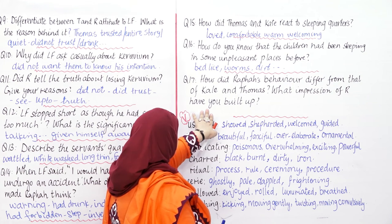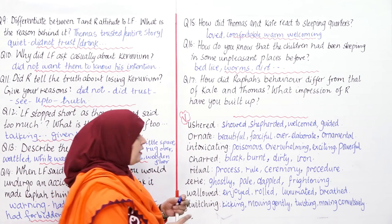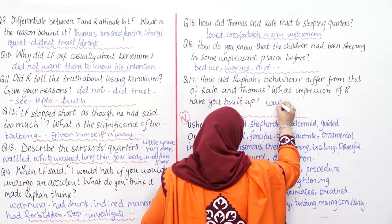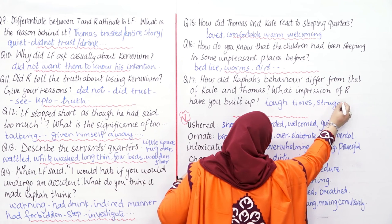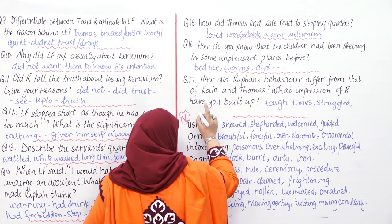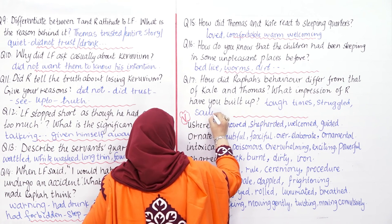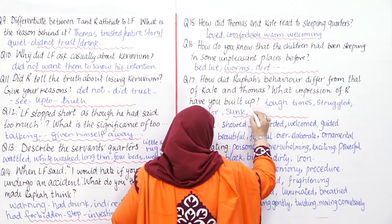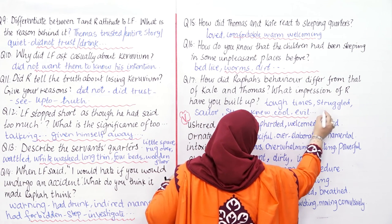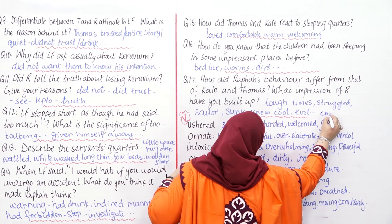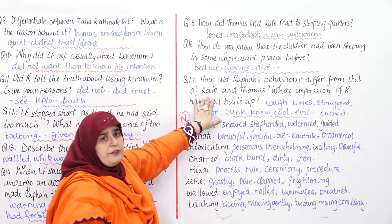Question: How did Rafa's behaviour differ from that of Kate and Thomas? His behaviour differed because he had been through very tough times. He had struggled for his survival — he had been a traveller or sailor on one of the ships that sank. So he knew who is good and who is evil, and his judgement is always correct. That is why Rafa's behaviour differed from that of Kate and Thomas.